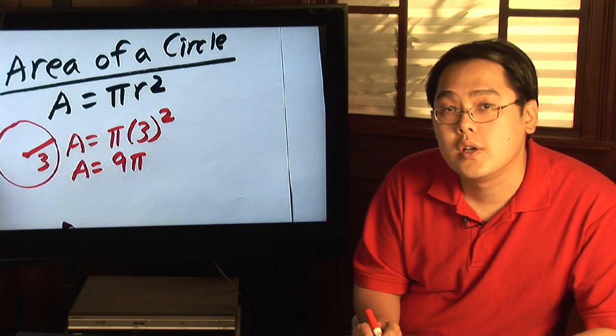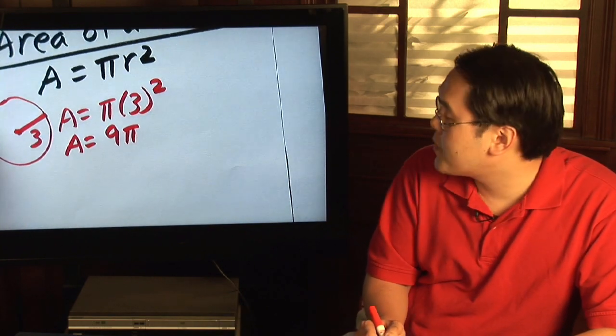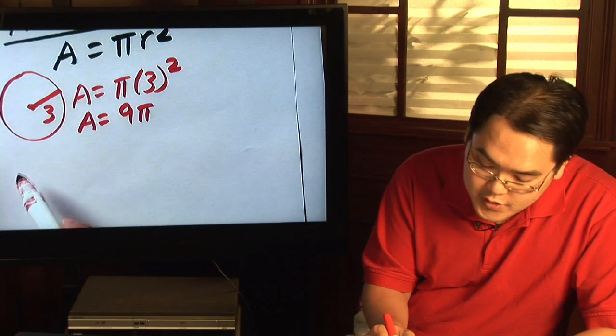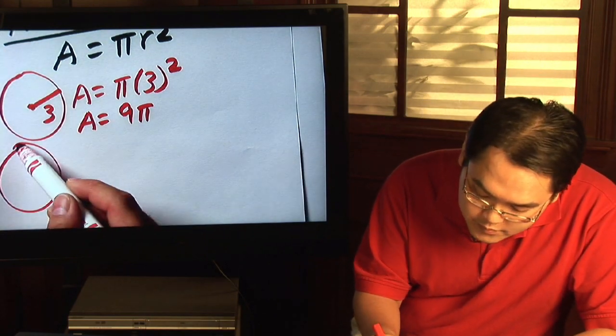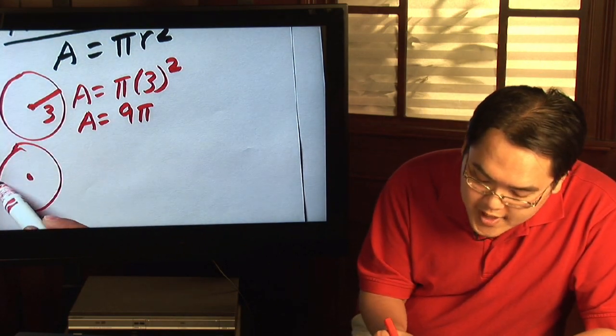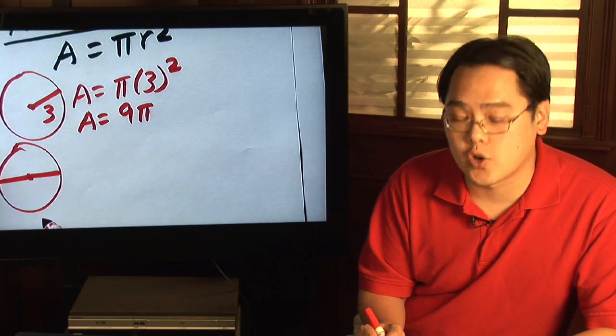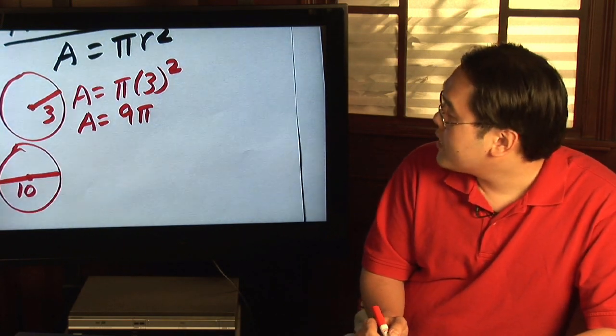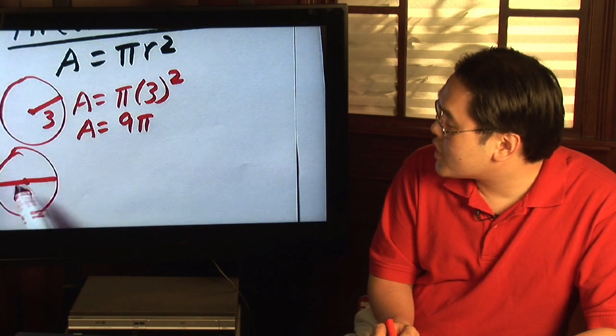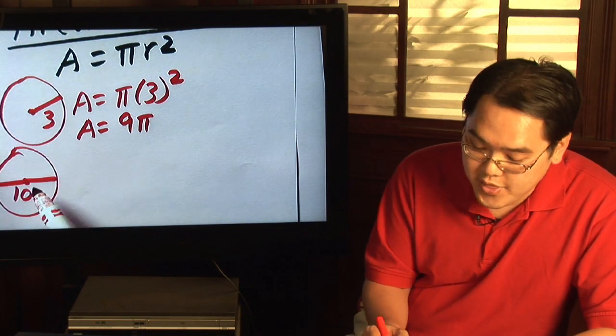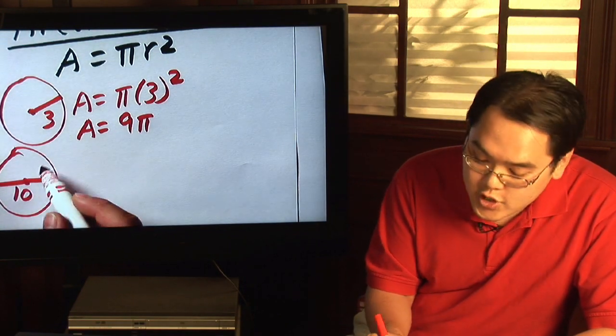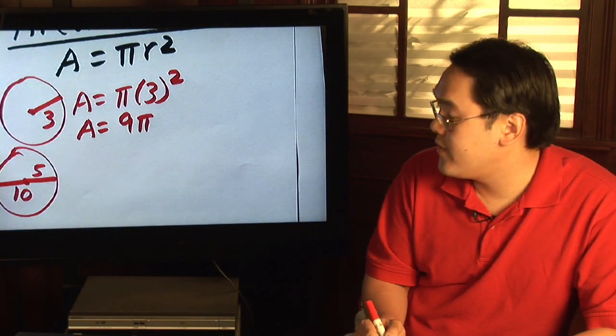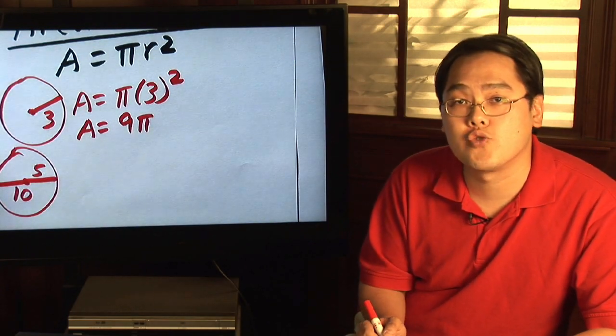Now, suppose they don't give you the radius outright but they give you something else. Let's say you have another circle where you're given that the diameter, or the distance across, is 10. Well, if the distance across the circle is 10, then the radius would just be half of that, so the radius here would be 5, and then finding the area should be pretty straightforward from there too.